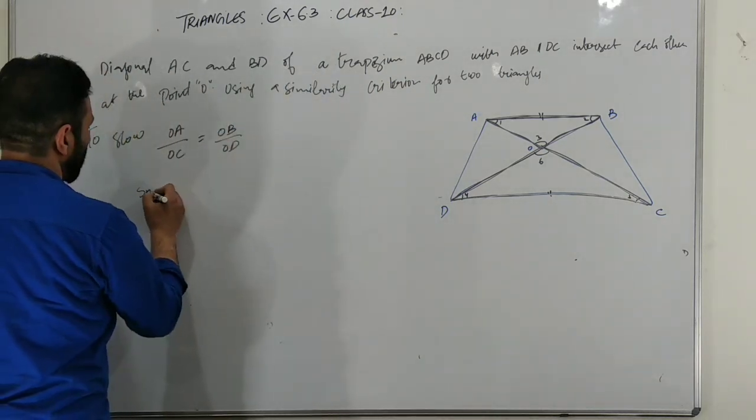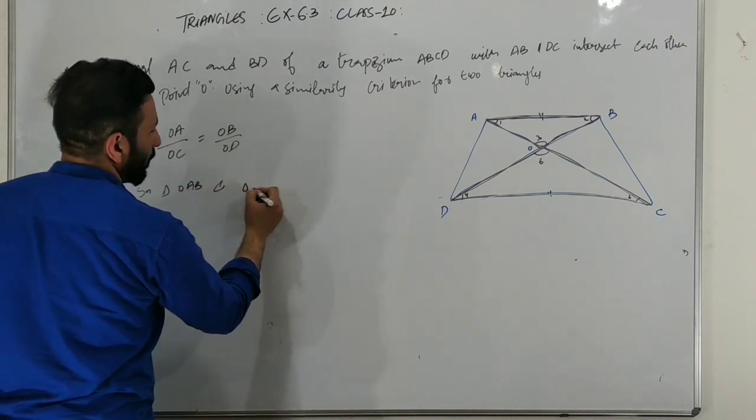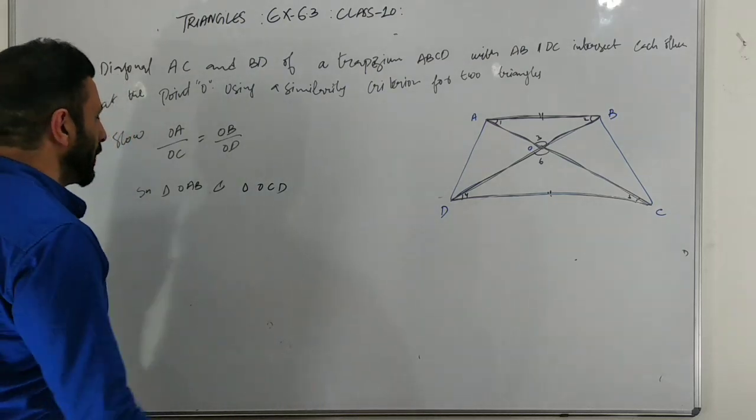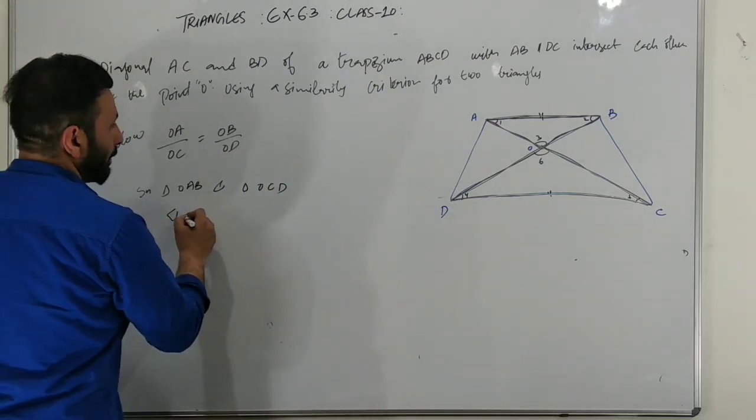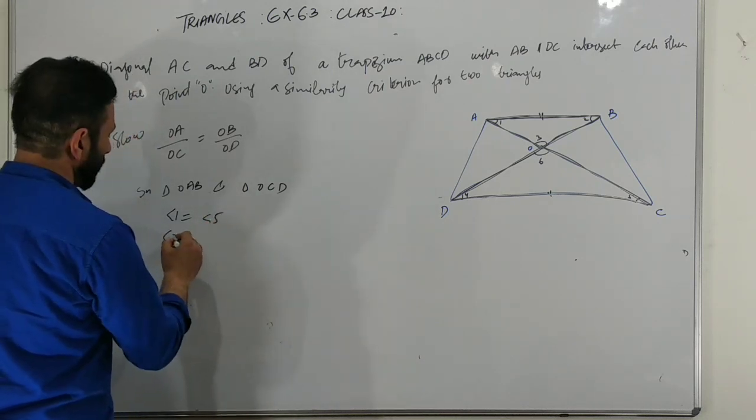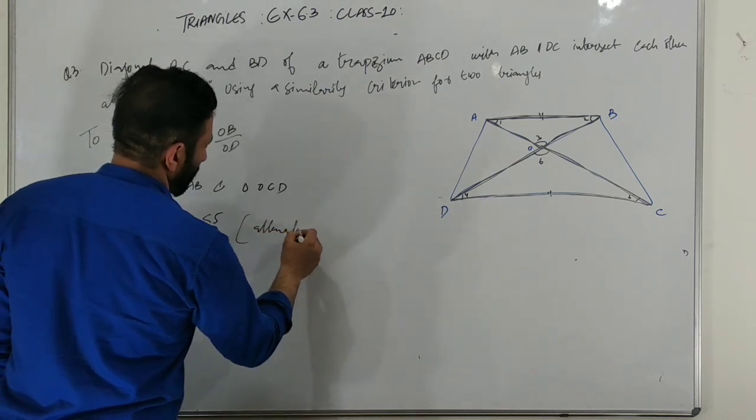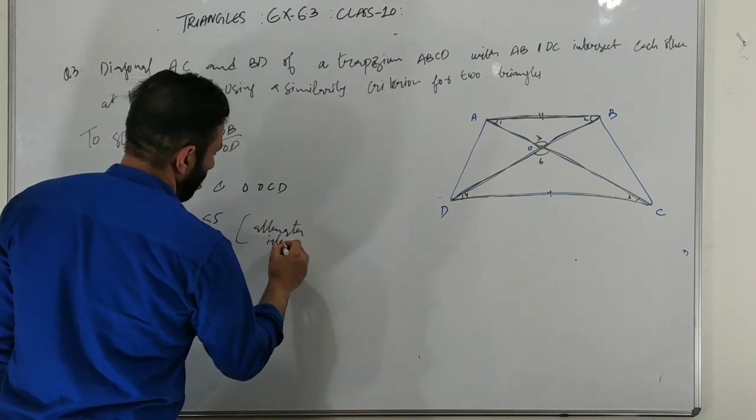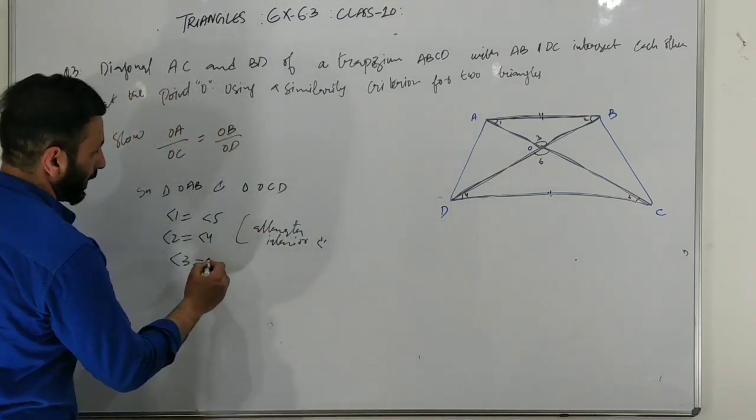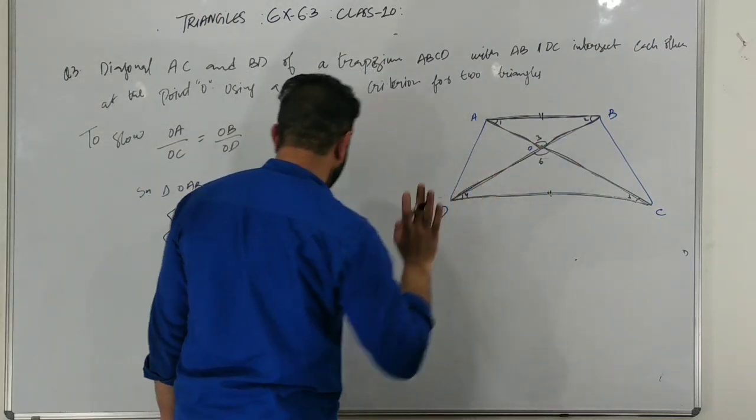Now we have to write in triangle OAB and triangle OCD. We will write angle 1 which is equal to angle 5, and angle 2 which is equal to angle 4. Let's write angle 3 and angle 6.